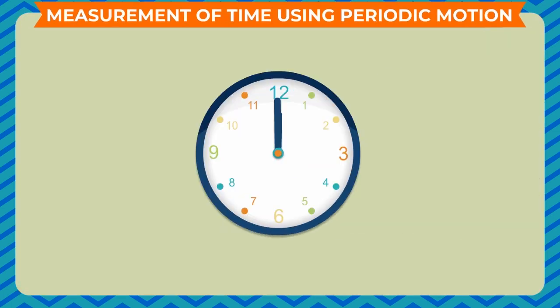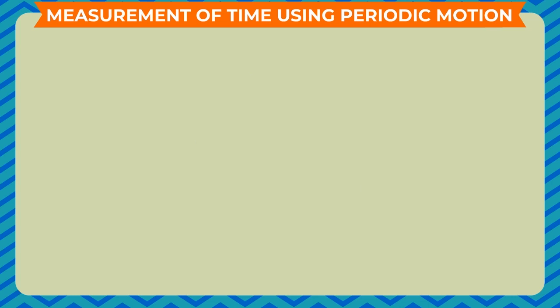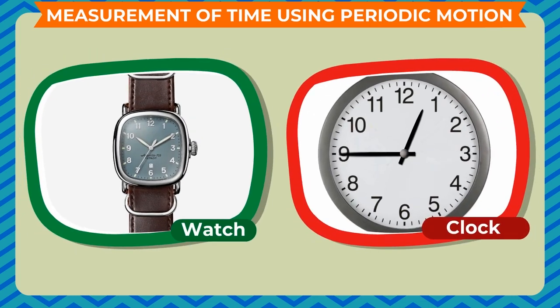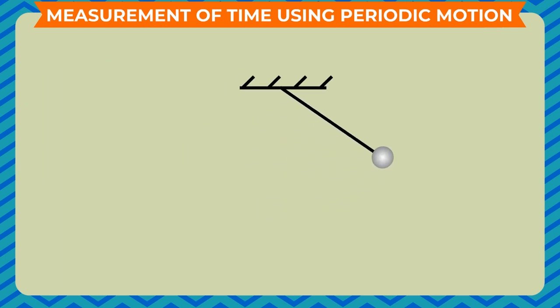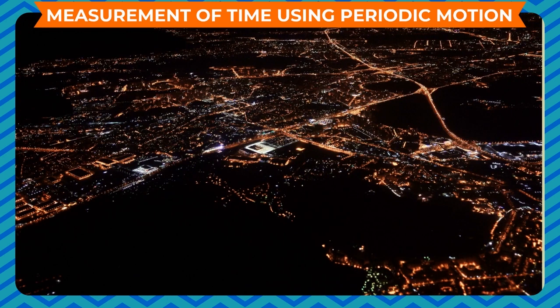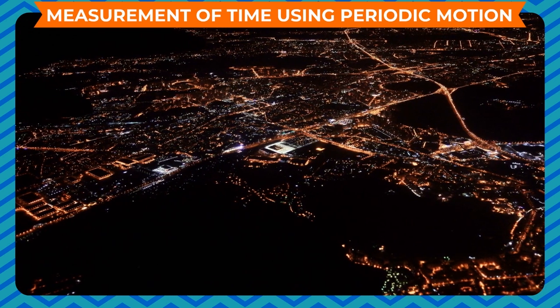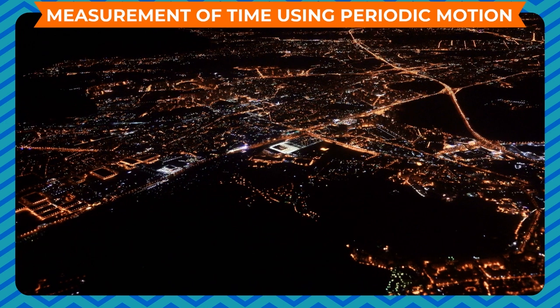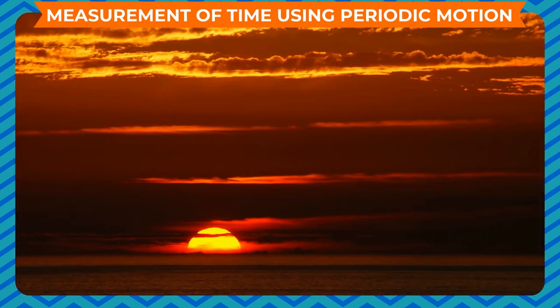Measurement of time using periodic motion: Motion that is repeated after a fixed interval of time is said to be periodic motion. Devices like watch and clock are all based on periodic motion. One of the most well-known periodic motion is that of a simple pendulum.